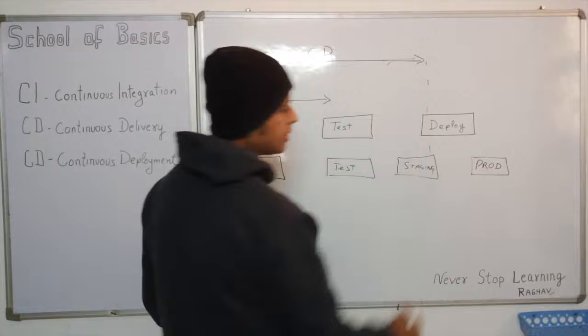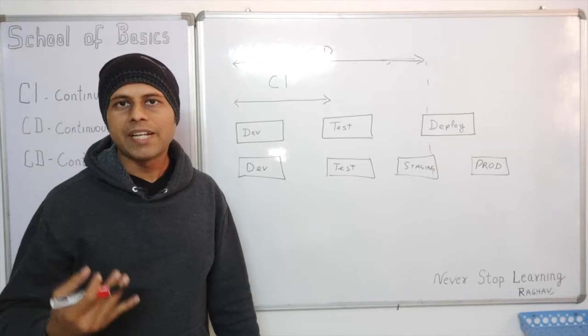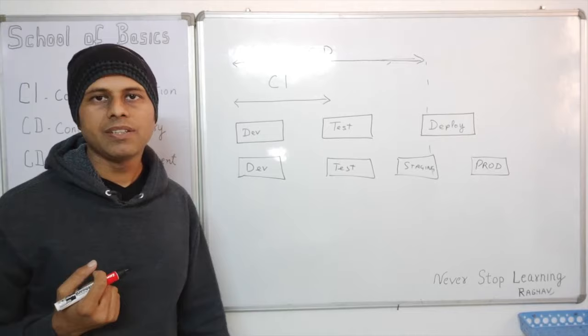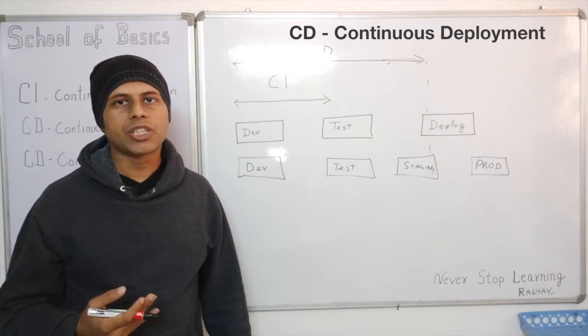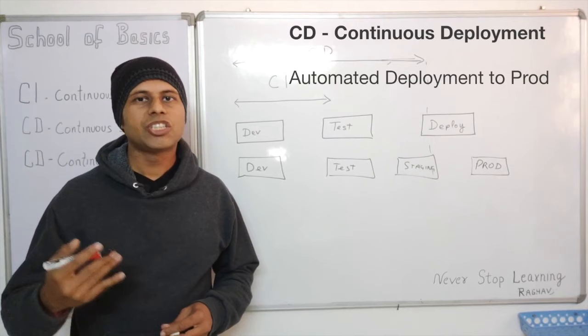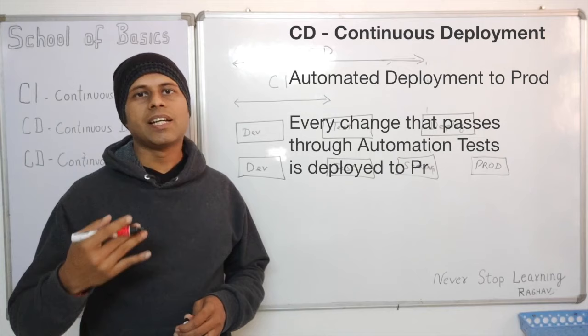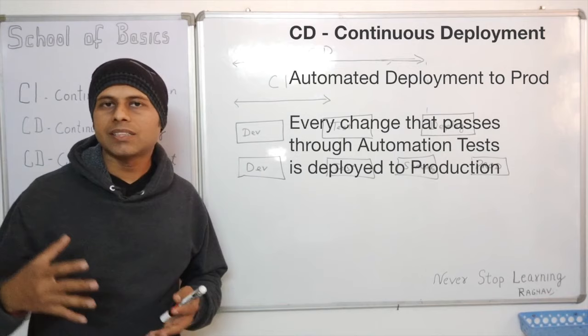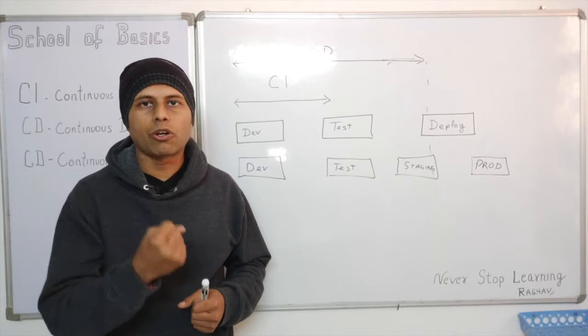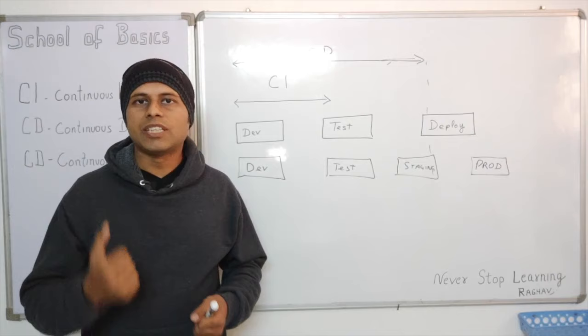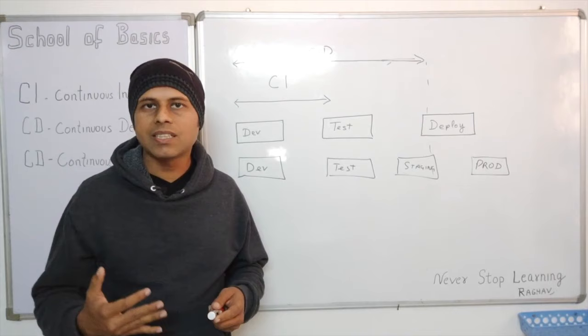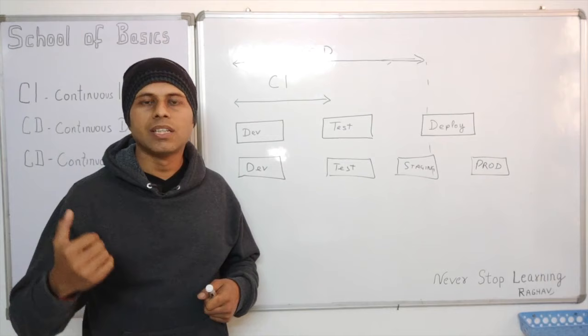For Continuous Delivery, it starts at the dev environment and goes until the staging environment. The goal is that our build and code are ready to be deployed on any environment. When we talk about Continuous Deployment, we also do automated deployment to production. Every change and every release that passes through all the automated tests is directly deployed to the production environment — similar to how Facebook and other large organizations deploy changes on a daily basis.